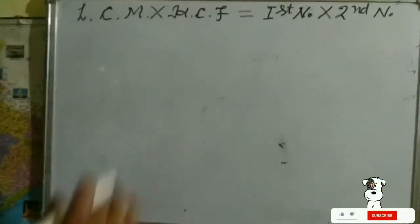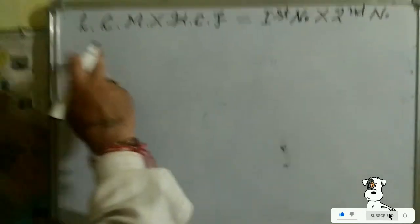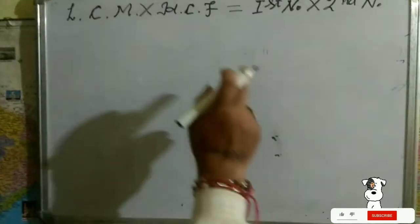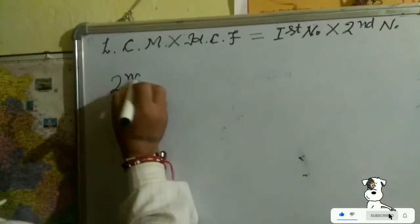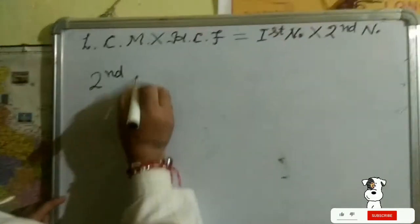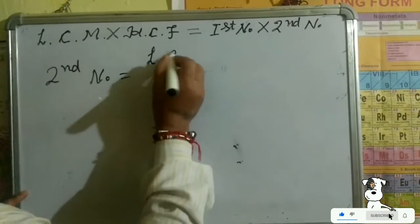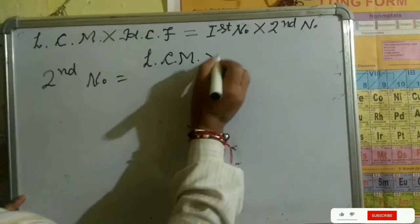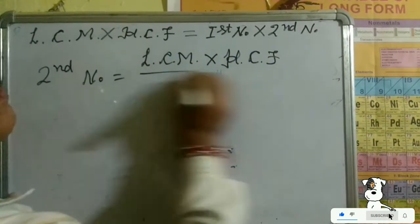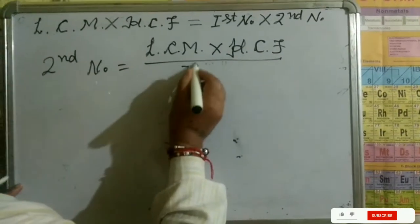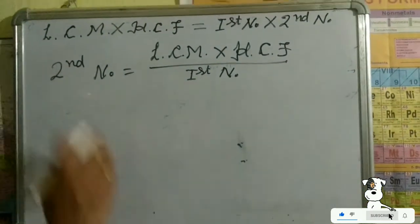The product of LCM and GCF equals the product of the first number and second number. If you know LCM, GCF, and the first number, and you want to get the second number, you will write: Second Number = (LCM × GCF) ÷ First Number. This is the rule and the formula.